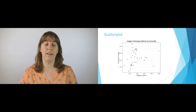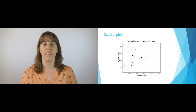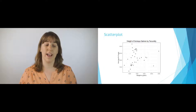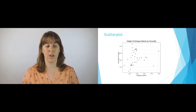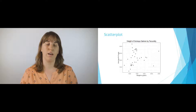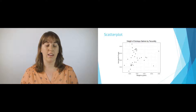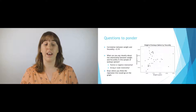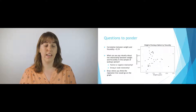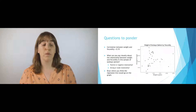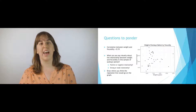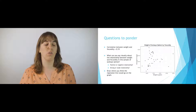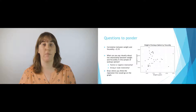Here we have a scatterplot with weight in grams on the X axis and fecundity — the average number of eggs — on the Y axis. We can see data points lower on the left side of the scatterplot, with a range of average number of eggs at lower weights, and a couple of outliers on the right side at higher weight. The correlation between weight and fecundity is 0.19. Take a moment to think about what you can say visually about the relationship: is it positive or negative? Strong or weak? And where would you draw the linear regression line?